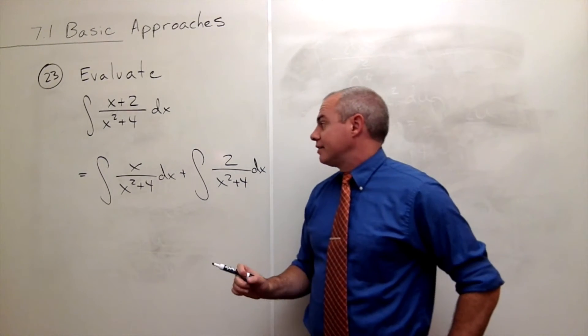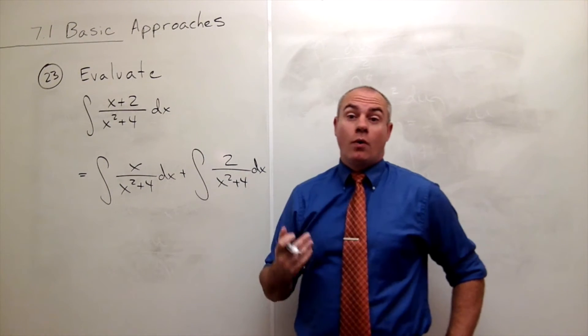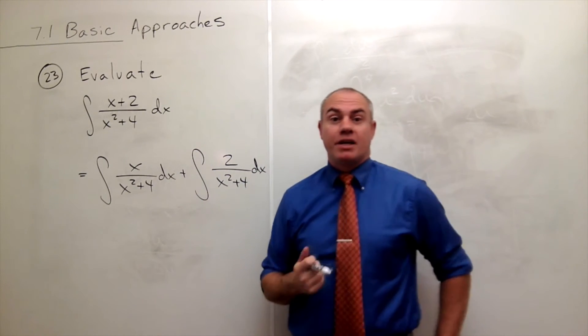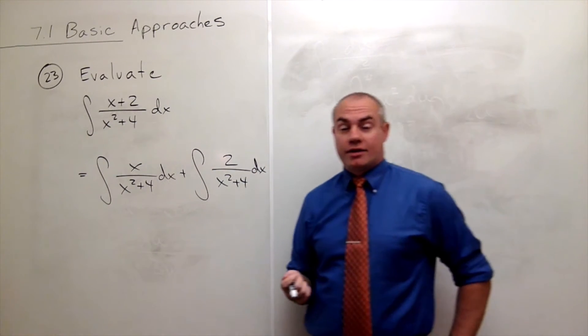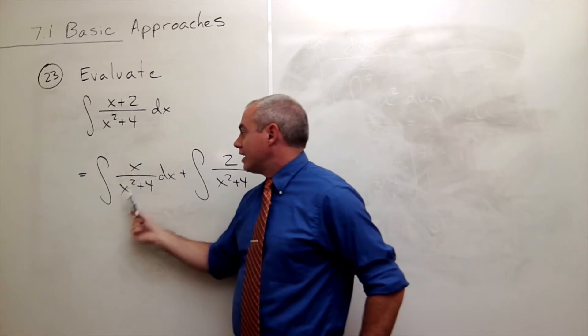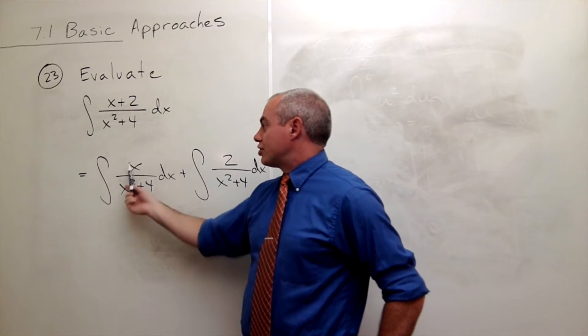This first guy, I can use a u substitution or I can just recognize this is very close to being a natural log antiderivative because the derivative of the bottom is almost the top. What's the difference? Well, it should be at 2x.